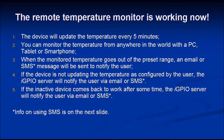In this example the device will update the remote temperature every five minutes. You can monitor the temperature from anywhere you have internet access — on your PC, tablet, or smartphone. When the monitored temperature goes outside the preset range, which you can change from anywhere in the world, you will receive an email or SMS text message.